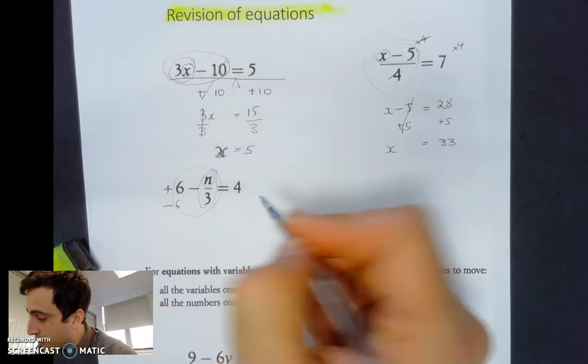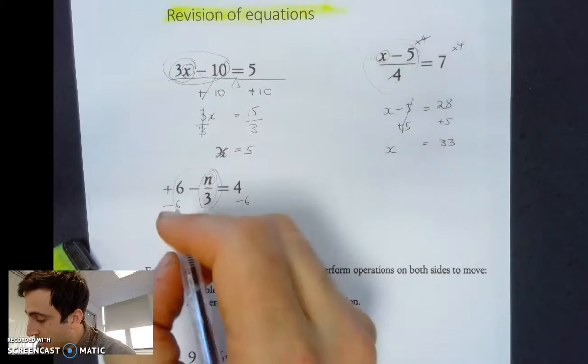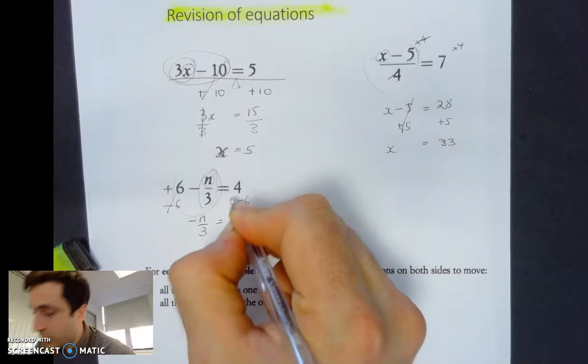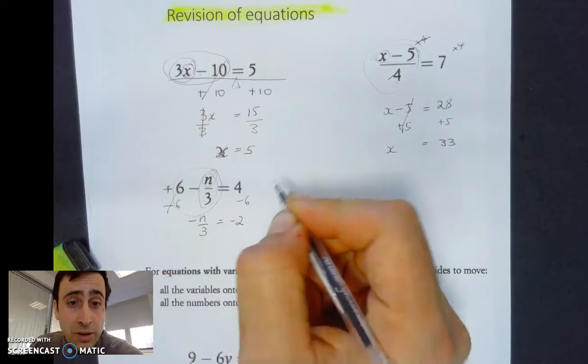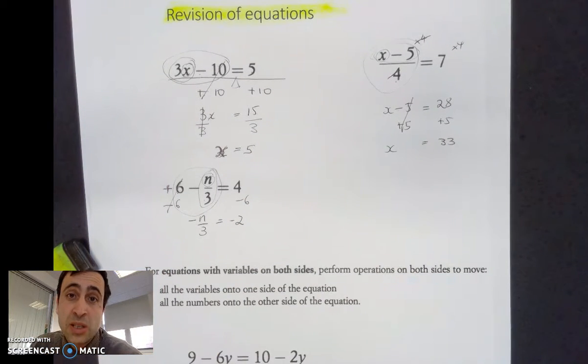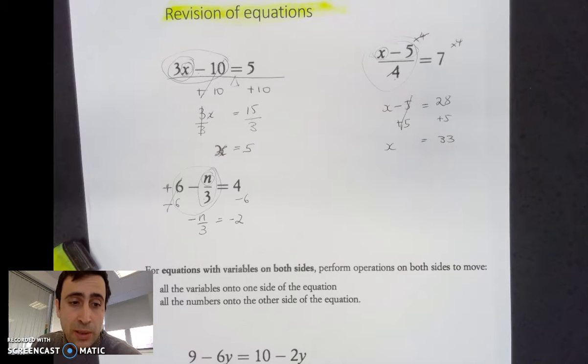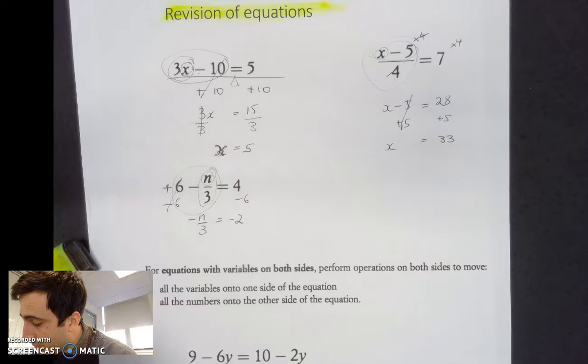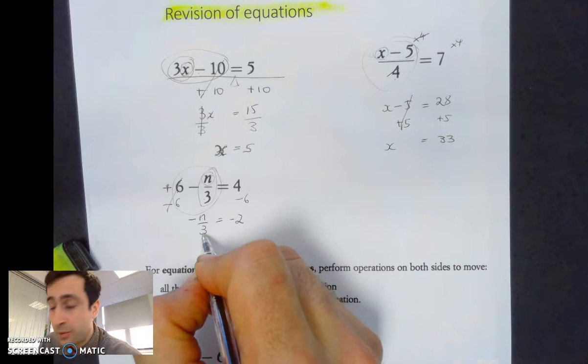So because it's a positive 6 out the front, to get rid of it I have to minus 6. Minus 6 from this side, and what we end up with is they cancel out. Minus n over 3 equals 4 minus 6, which is negative 2. Be very careful with your negative numbers because this is where most people make their mistakes.